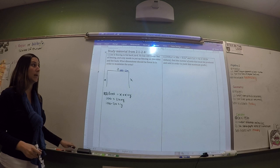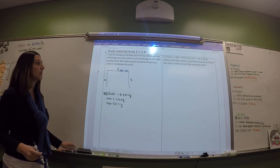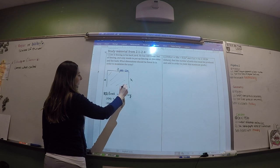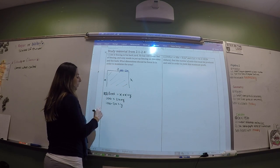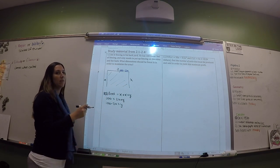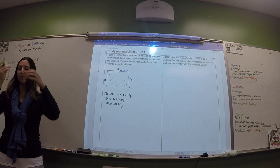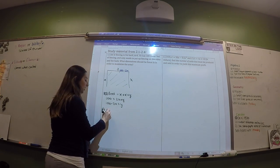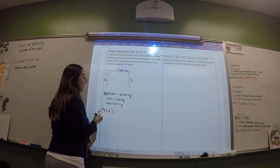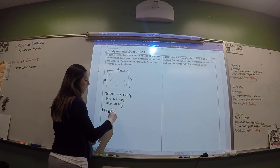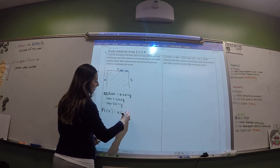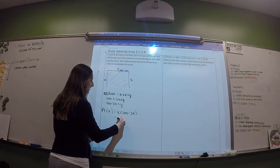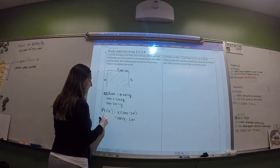The back piece is going to be Y = 100 minus 2X. Now we want to know what dimensions maximize the area, so we need to create an area equation. You find the area by multiplying X times (100 minus 2X).